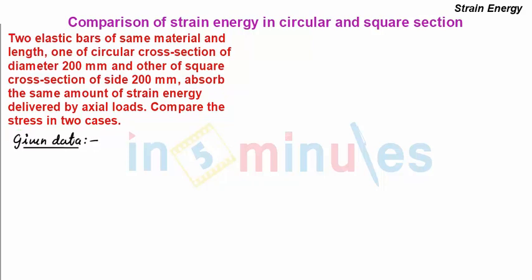Let us note down the given data. We have two elastic bars, one is of circular section and other is of square section. The diameter of circular section is 200 mm and the side of square section is 200 mm.